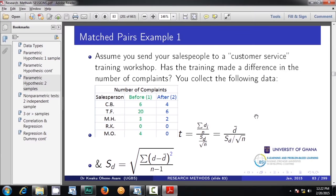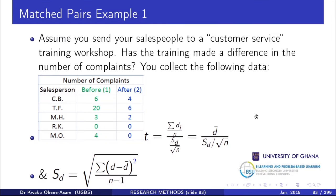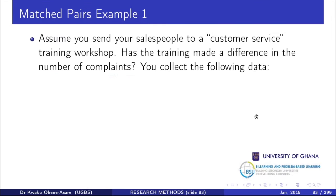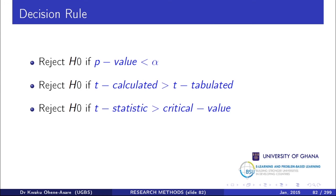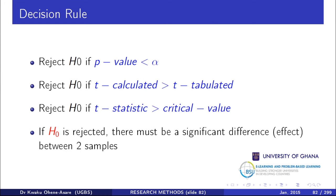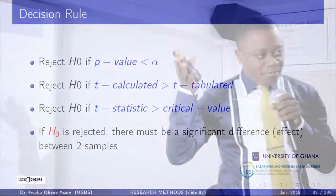Let's review the decision rules. Reject the null if the t-calculated is greater than t-tabulated. Also reject if the p-value is less than alpha. The p-value is the actual mistake you're expected to make, while alpha is the expected allowable mistake. You want the actual to be smaller than the expected — that gives you enough confidence to reject the null.